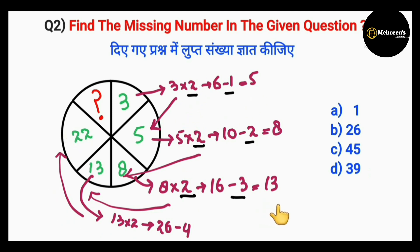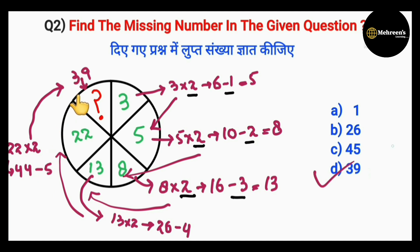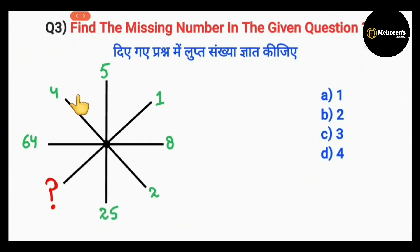To repeat: multiply by 2 minus 1, minus 2, minus 3, minus 4 — here we do multiply by 2 minus 5. So: 22 into 2 is 44, minus 5 equals 39. Our missing number is 39, so option D is the correct one.